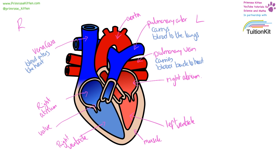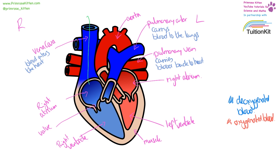Now we have everything labeled, we're going to look at the path that blood takes. We have blood in two different colors: blue for deoxygenated blood and red for oxygenated blood. Deoxygenated blood is blood that doesn't have oxygen, and oxygenated blood is blood that does have oxygen. Blood comes into the heart from the rest of the body through the vena cava, into the right atrium, passing through a valve into the right ventricle.